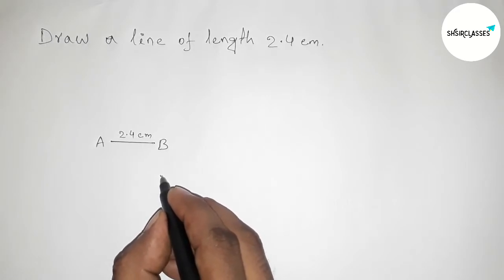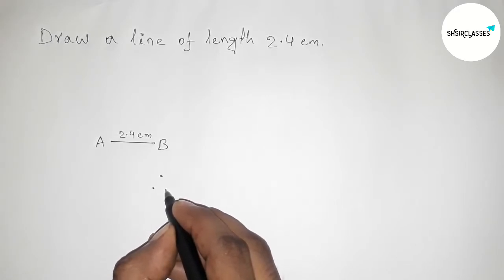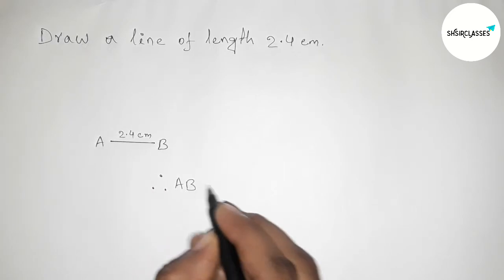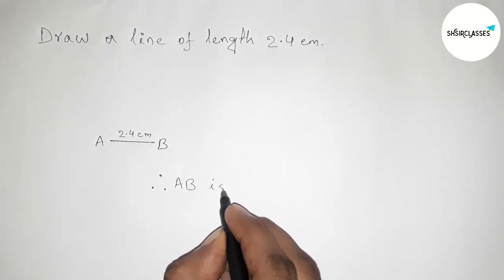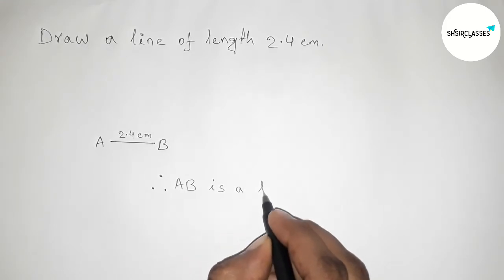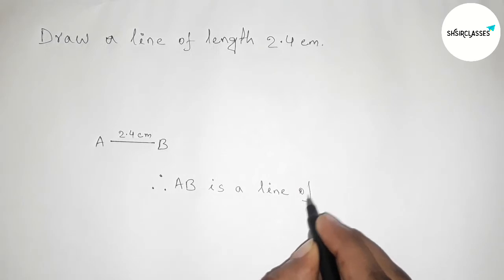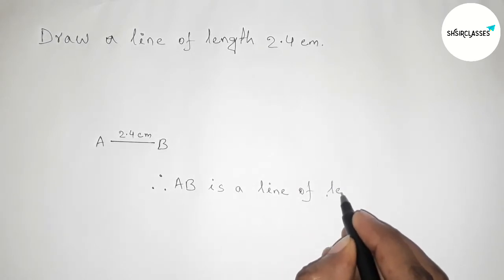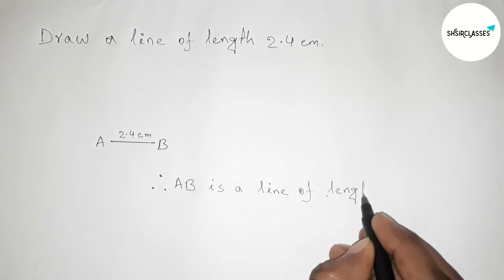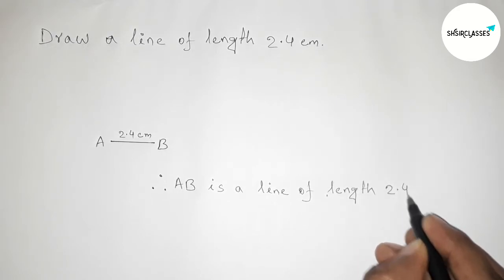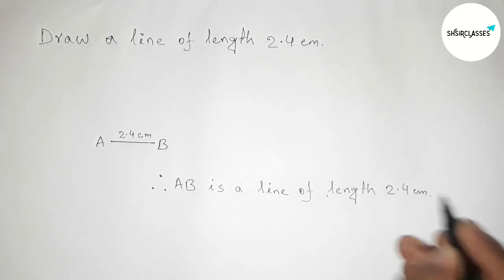Therefore here AB is a line of length 2.4 centimeter. So by this way you can draw a line of length 2.4 centimeter by using scale at home.